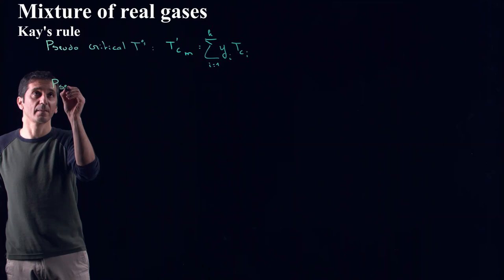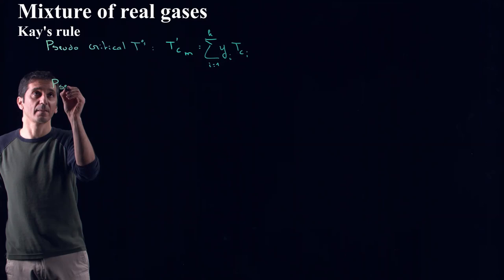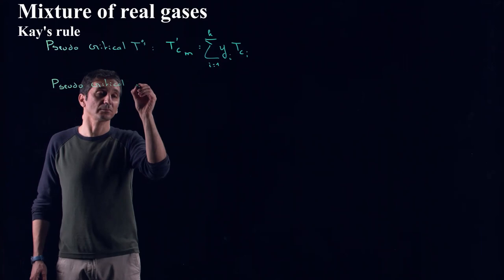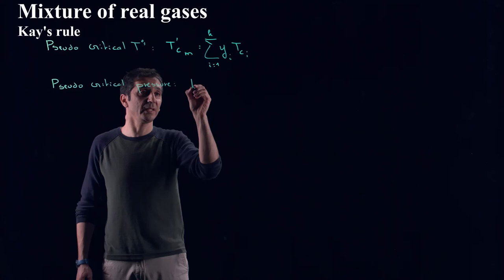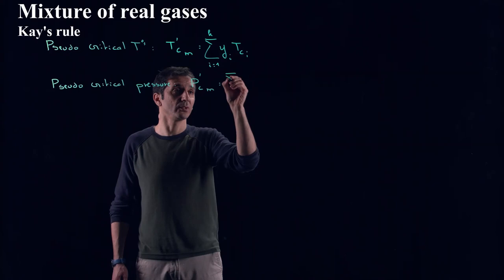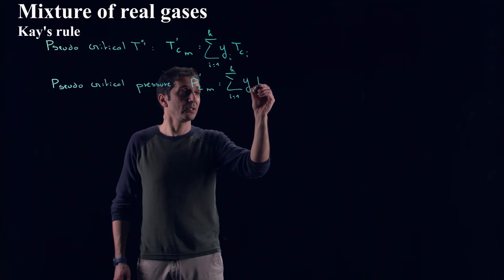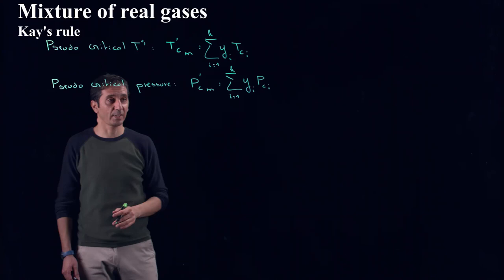The same thing we can calculate also the pseudocritical pressure by writing our P prime critical for our mixture will be equal to the summation one to K of Yi cross the critical pressure of each component of our mixture.